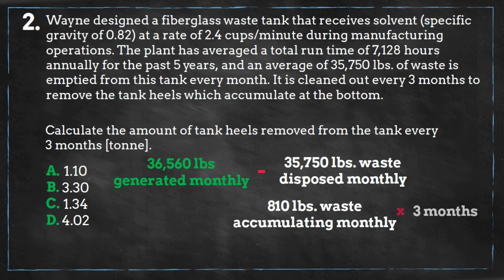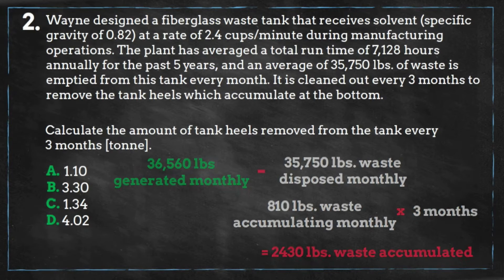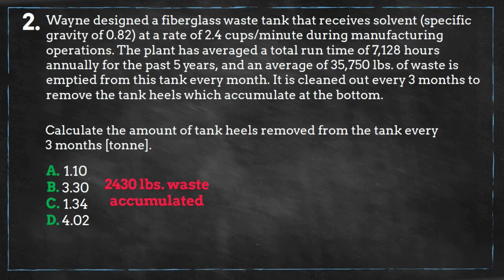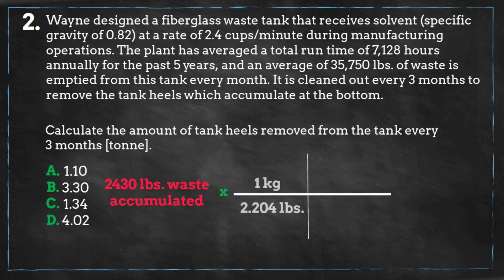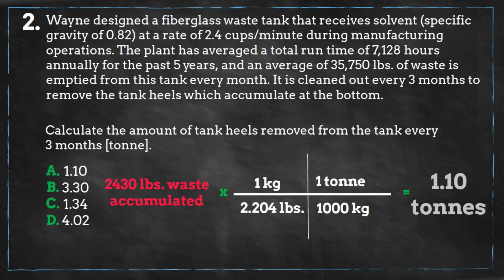We'll multiply by the time period that the tank is cleaned out, and we get an answer of 2,430 pounds of waste accumulated. We have the correct answer, but now we need the correct units. Using some unit conversions to convert from pounds to tonnes, we get an answer of 1.1 tonnes, which is answer A.